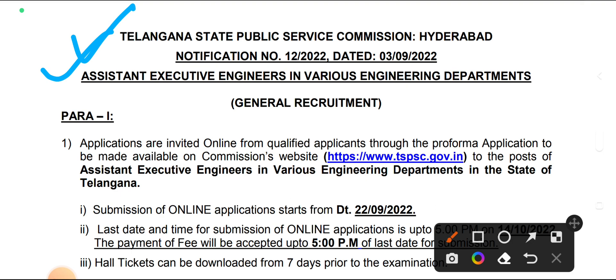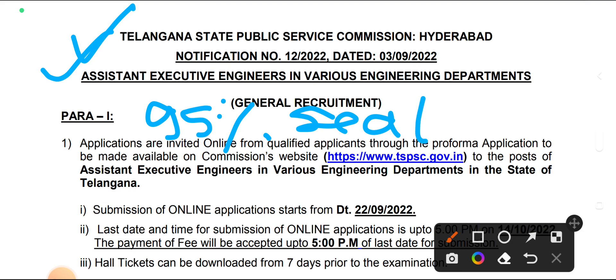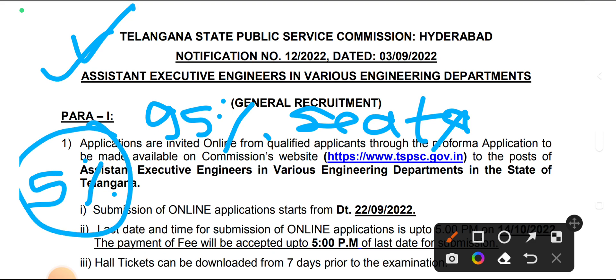There are many doubts in students. The first question is whether other state candidates are allowed or not. In this notification, 95% seats are reserved for local students, and 5% is for other state candidates, who will be counted in the general category.